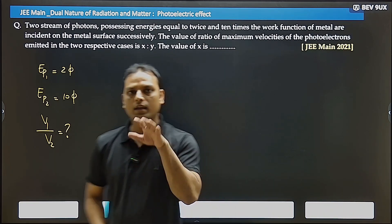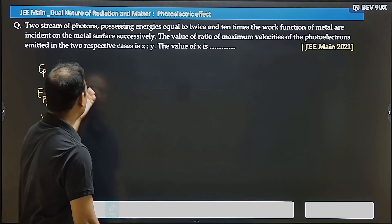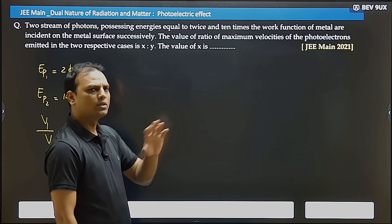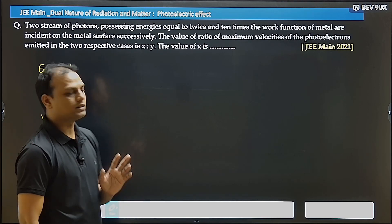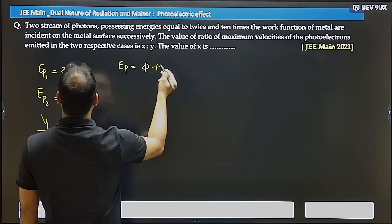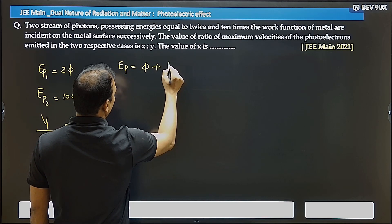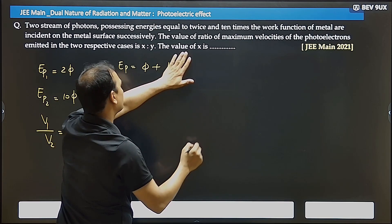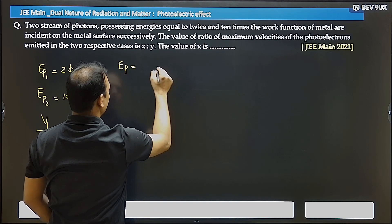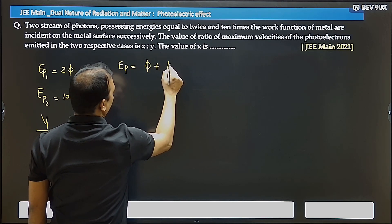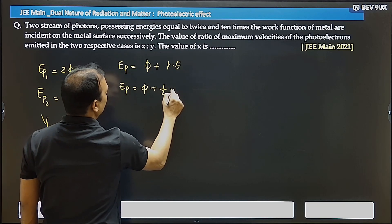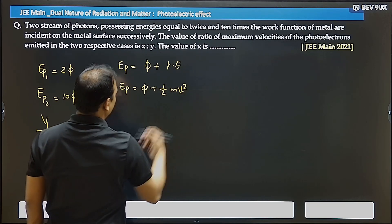What do we do in photoelectric effect? We have to write two equations and divide them. This question already appeared in 2023, it's a repeat question. So from here, I know the photoelectric equation. Energy of photon equals work function plus kinetic energy. So energy of photon equals work function plus half mv squared.